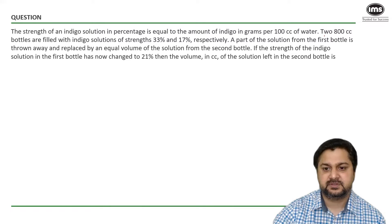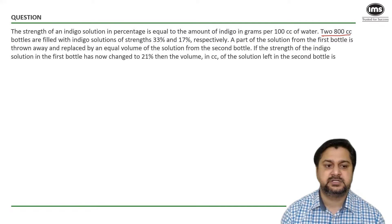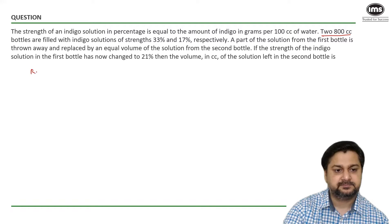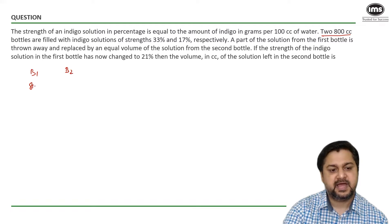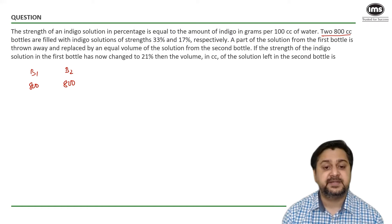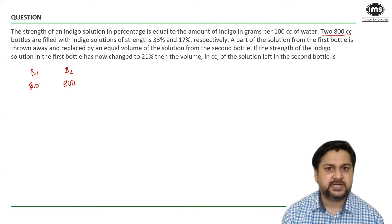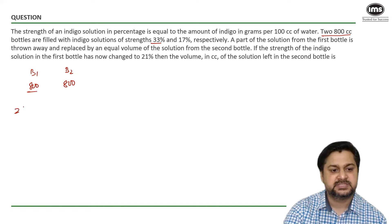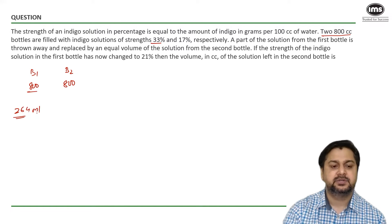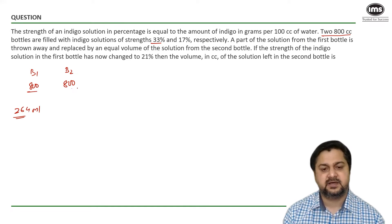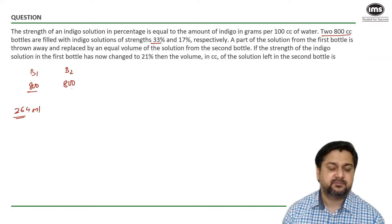Two 800 cc bottles are filled with indigo solutions of strength 33% and 17% respectively. So there are two bottles — bottle 1 and bottle 2. Both of them have a total capacity of 800 cc. Out of this 800 cc, 33% — that is 33 times 8 — gives us 264 ml of indigo in bottle 1, and 17% of 800, that is 136 ml, is the amount of indigo in bottle 2.